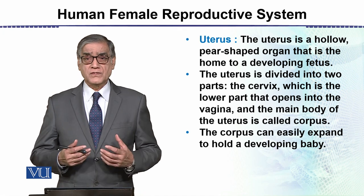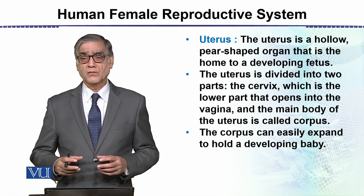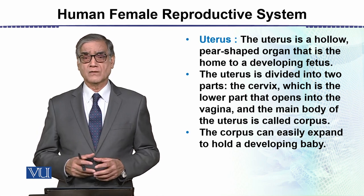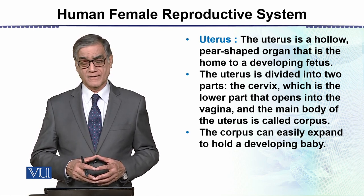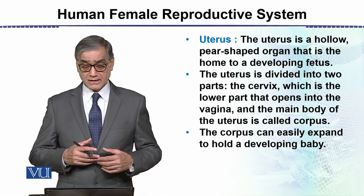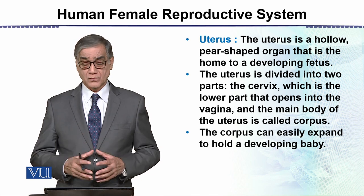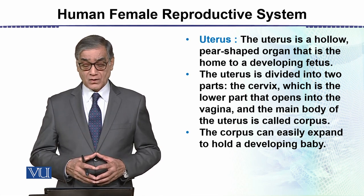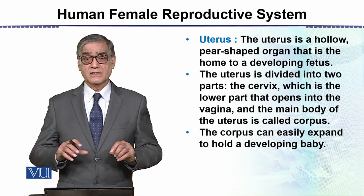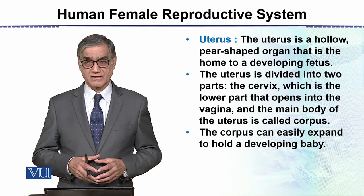The uterus is a pear-shaped, thick-walled structure. It has an opening called the cervix, which connects out to the vagina. The main part of the uterus is called the Corpus, and it is in the Corpus where the development of the child occurs.